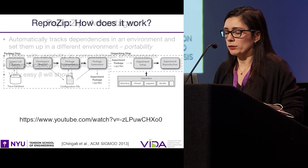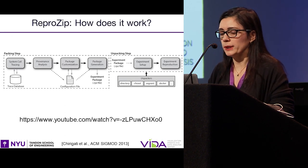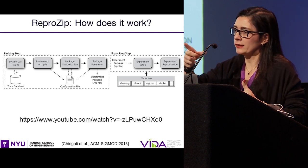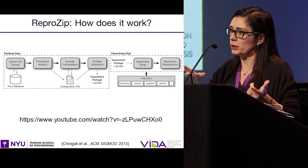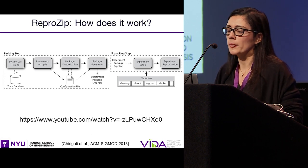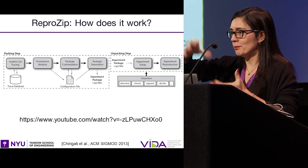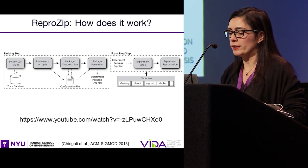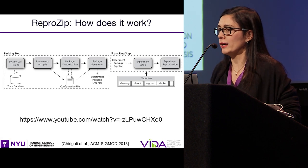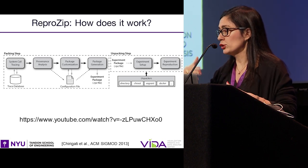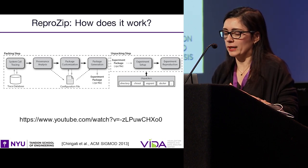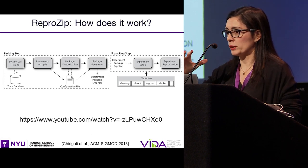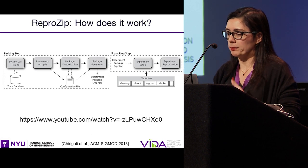Underneath, what ReproZip does is that it relies on ptrace. As you run your application, it will automatically check everything that gets called — all the files that are read, including input files, libraries, and so on. It will generate like a shipping bill of everything that was used. It will analyze this provenance and generate a configuration file that you as a user can actually edit and customize what gets packed. And last but not least, it generates a package that contains all those dependencies.